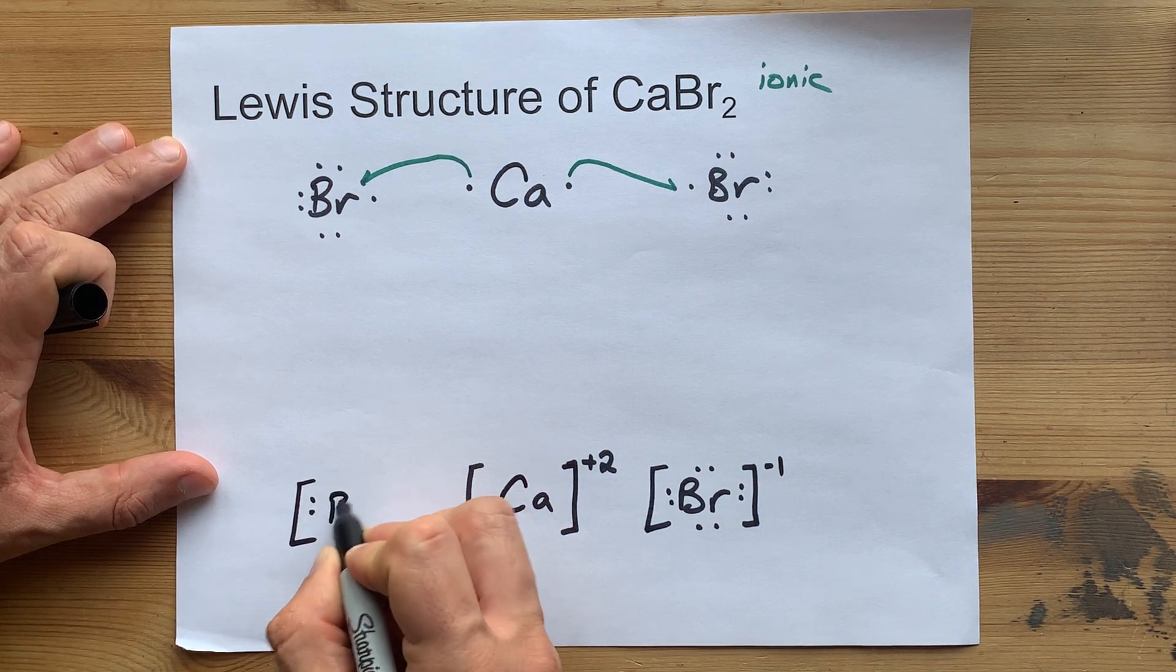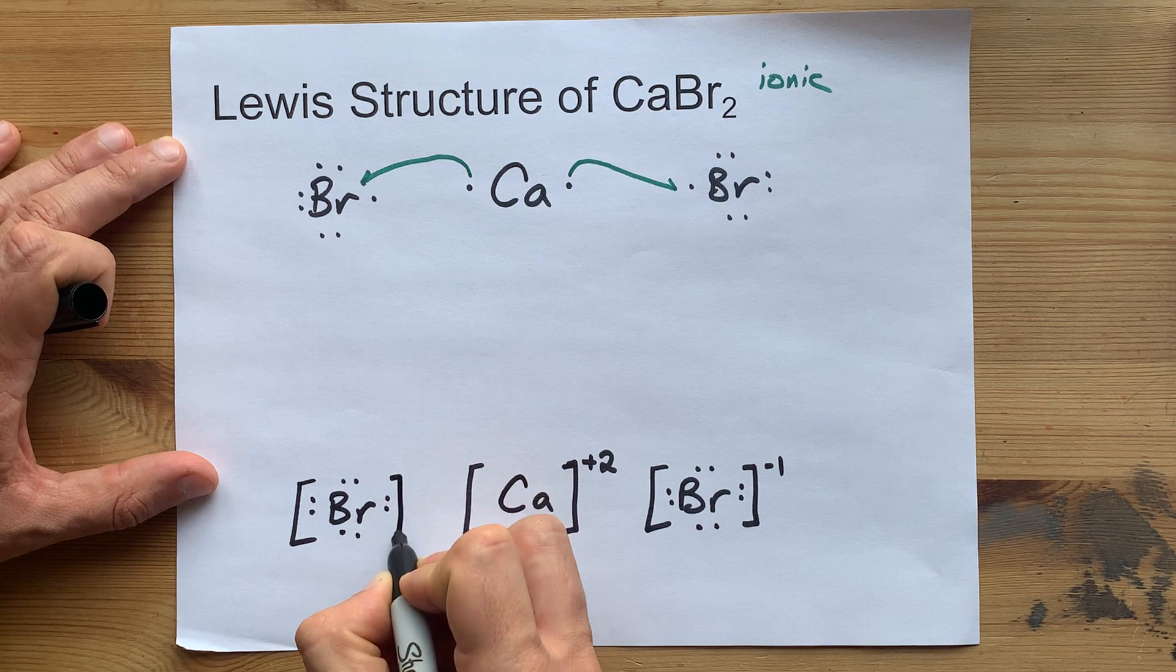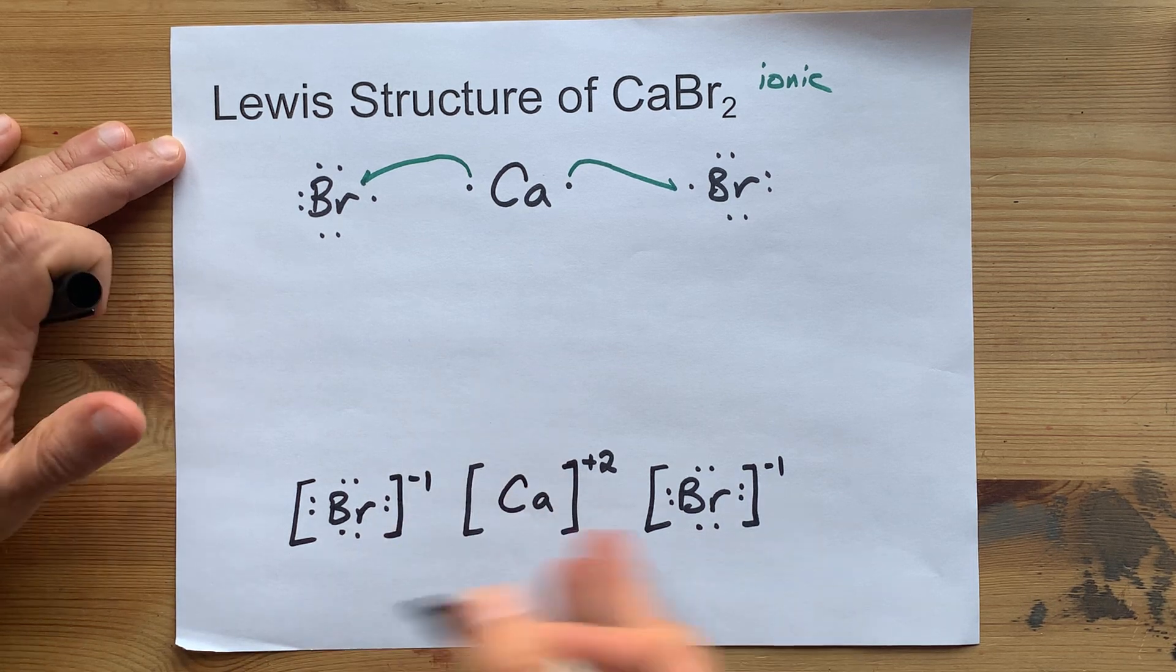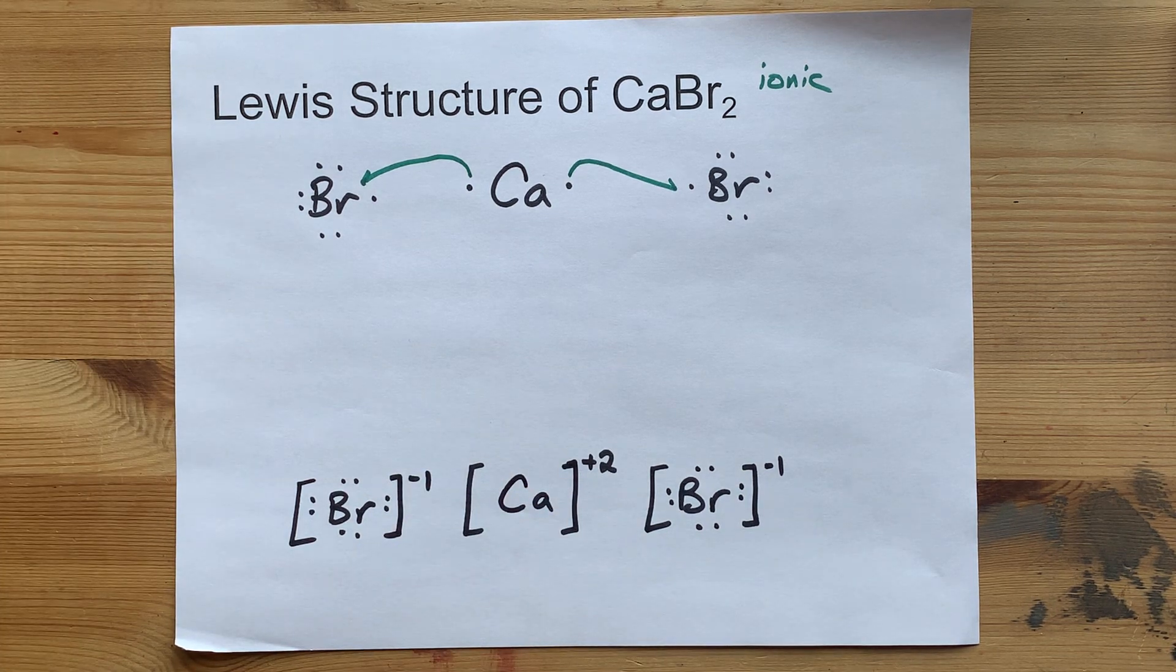Your teacher might want you to draw both of those bromines. This is your final Lewis structure for CaBr2.